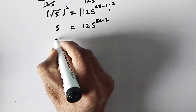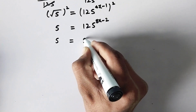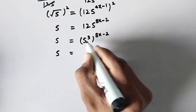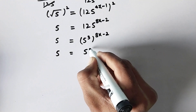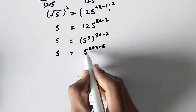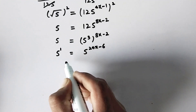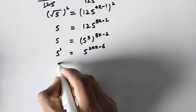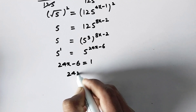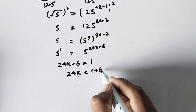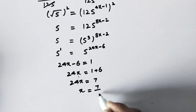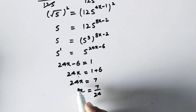Now we write 5 is equal to 125 to the power 8x minus 2. Since 125 is equal to 5 to the power 3, this becomes 5 to the power 3 times (8x minus 2), which gives 5 to the power 24x minus 6. Since the bases are the same on both sides, comparing powers gives us 24x minus 6 equals 1, so 24x equals 7, and therefore x equals 7 over 24.